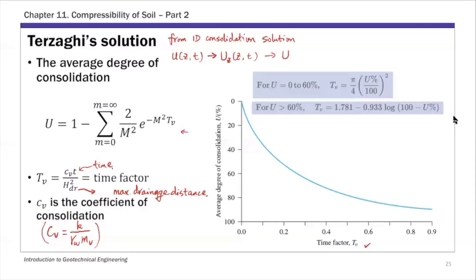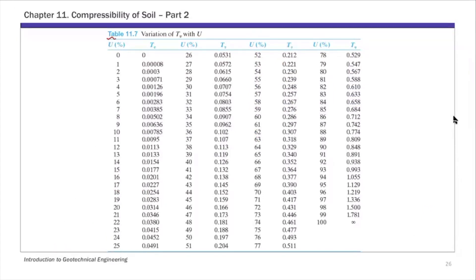For the average degree of consolidation, since it's linked to the excess pore water pressure from Terzaghi's solution, we can link capital U to the time factor as well. What we're going to use today are equation 11.66 and equation 11.67, which link the time factor T sub V to the average degree consolidation U, from which we can get the consolidation settlement. We'll also use Table 11.7, which is a tabular form of these two equations — if you know U you can find T sub V, or if you know T sub V you can find U.